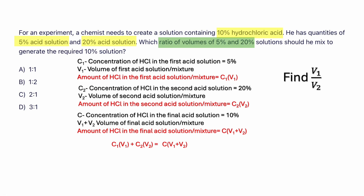Now let's plug in what is given. C1 is 5. When dealing with percentages, you can either write it as a percentage or as a decimal. Since this is an equation, it doesn't matter — you just need to be consistent. I'm going to leave it as a percentage to avoid decimals. So it's: 5·V1 + 20·V2 = 10·(V1 + V2). Now let's expand the right-hand side: 5·V1 + 20·V2 = 10·V1 + 10·V2, distributing 10 to both V1 and V2.